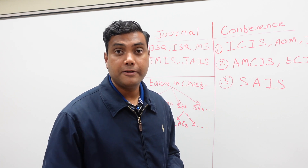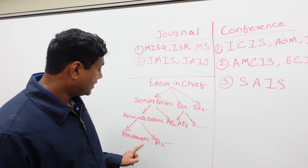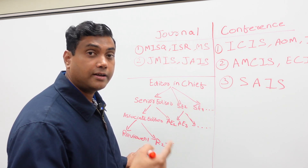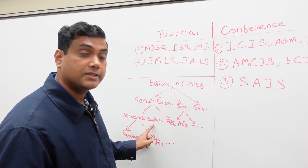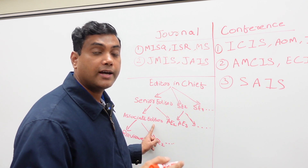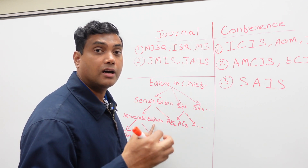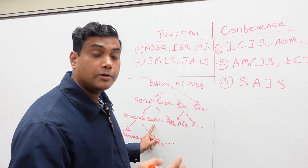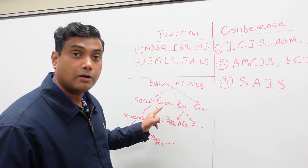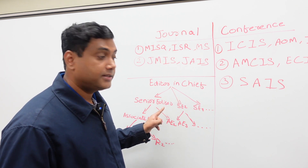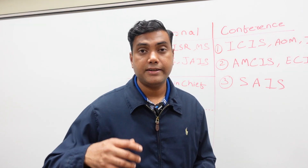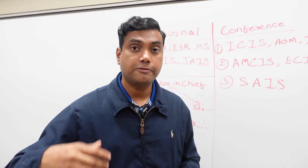When you start your career, you play the role of a reviewer at the bottom level. When you have published enough papers and get promoted and receive tenure, you rise up to associate editor. Once you have published even more papers, established yourself as a reputed scholar, and become a full professor, you can rise to the position of senior editor. Among the senior editors, an editor-in-chief is selected whenever there is a new term for the EIC.